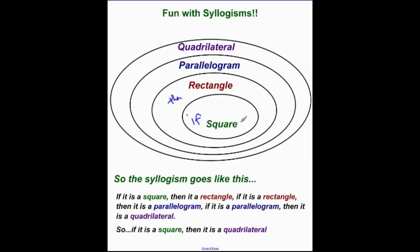So as you can see that we have if P, here we have our P, Q, R, and S. So if P then Q, if Q then R, if R then S. We can just leapfrog all that and go straight to here. If it is a square, then it is a quadrilateral.